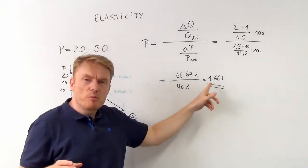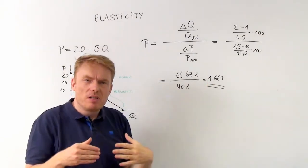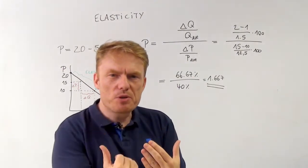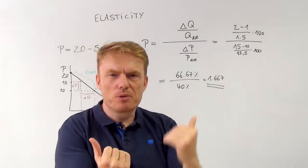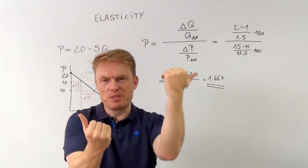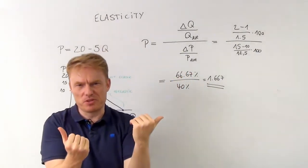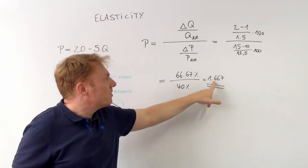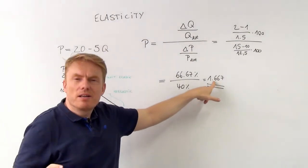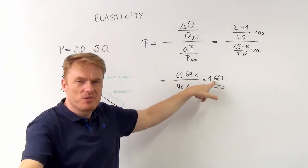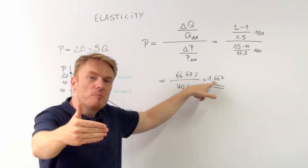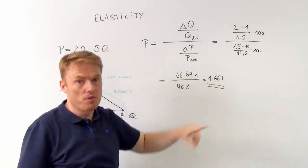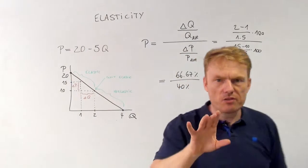What does that number mean? It means if the price is reduced by 1%, the quantity goes up by 1.67%. That's very important to understand. And if you reduce the price by 2%, then the quantity goes up by 2 multiplied by 1.667, and so forth.